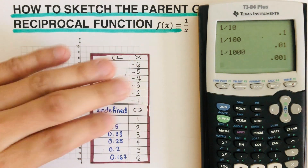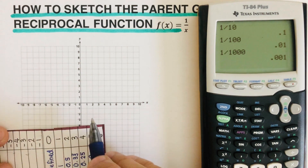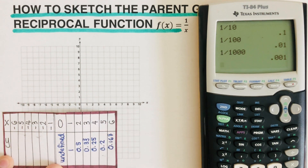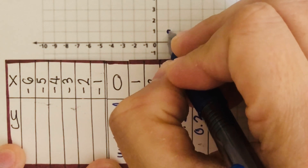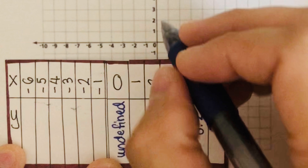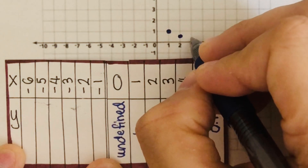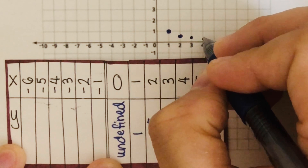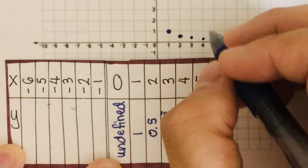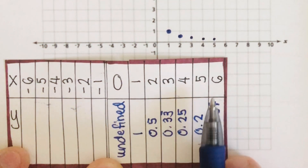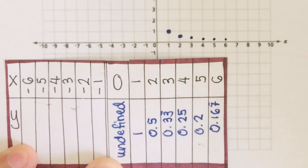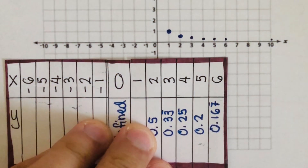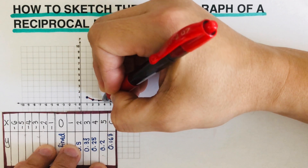Now let's graph these values. At x = 0 it's undefined so we can't plot it. At x = 1, y = 1. At x = 2, y = 0.5 — halfway up. At x = 3, y = 0.33 — getting closer to 0. At x = 4, y = 0.25. At x = 5, y = 0.2. At x = 10, y = 0.1 — very close to 0. I'll use a different color to draw this curve.